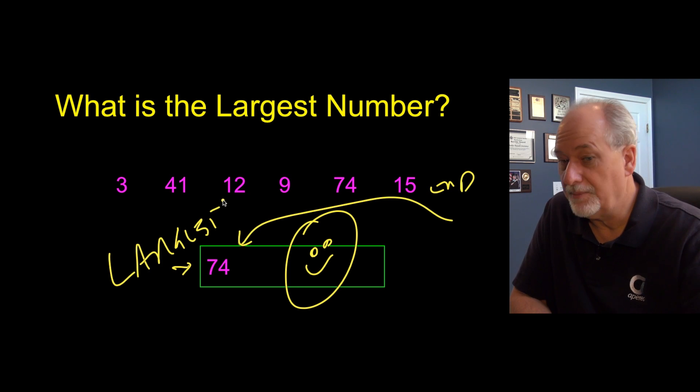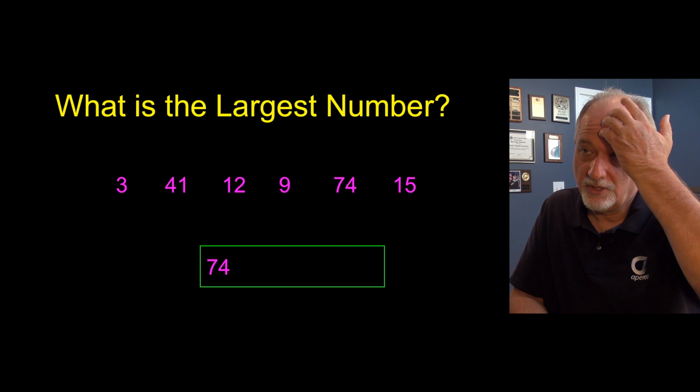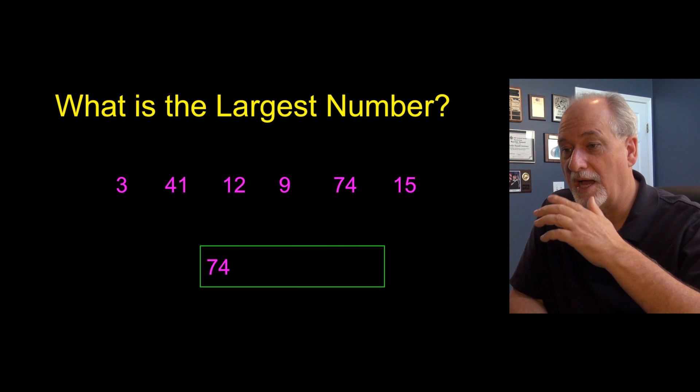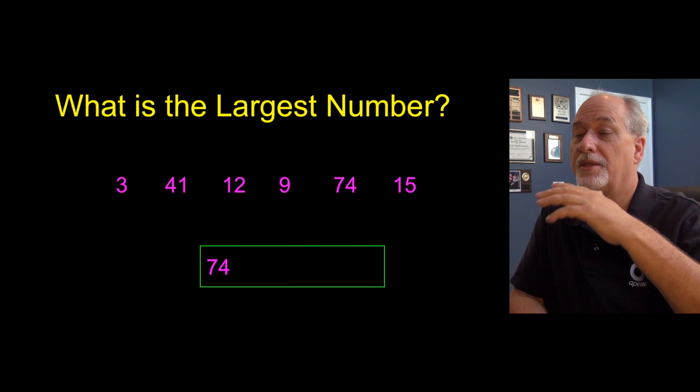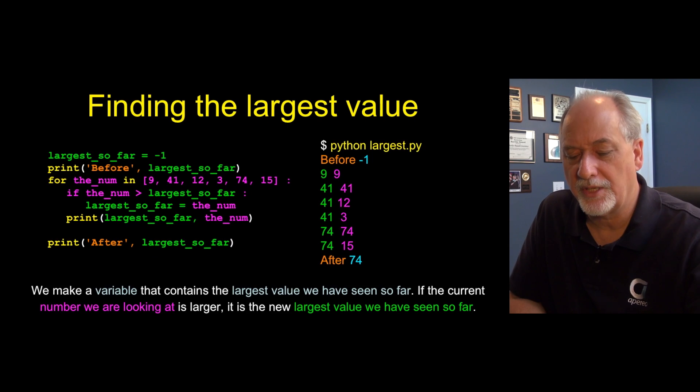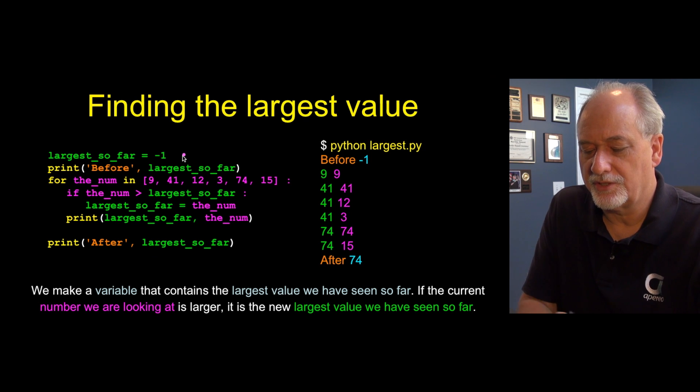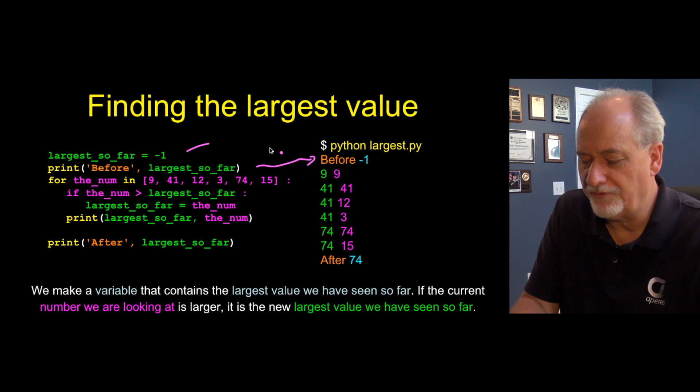So if you look at all the numbers, keeping track of the largest so far, at the end of all the numbers, the largest so far and the largest are the same thing. That's how you get this idea of something you're doing during the loop is not really the answer, but by the time the loop is done, you will have the answer. So here's a bit of code that does this with our numbers. So let's take a look. I have this variable called largest so far. I set it to negative one before the loop. Remember there's a loop before and a loop after and loop in the middle—before it's negative one.